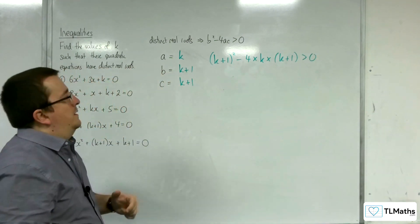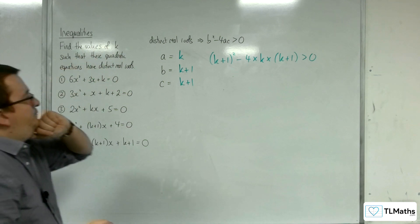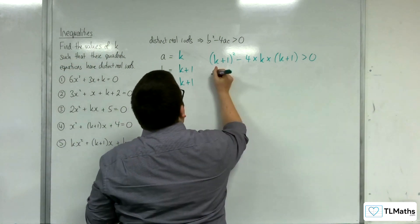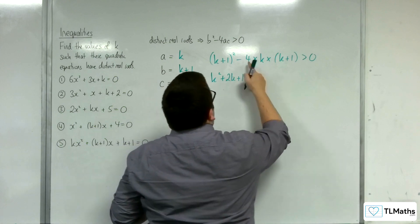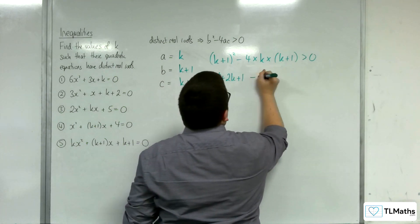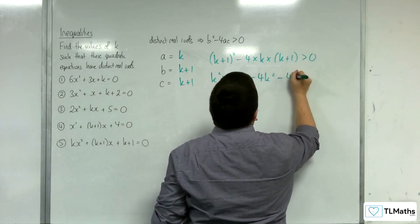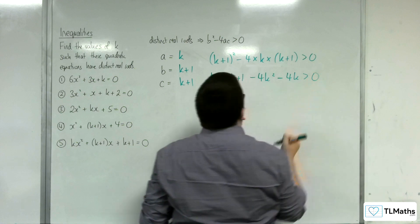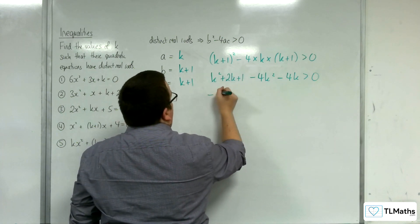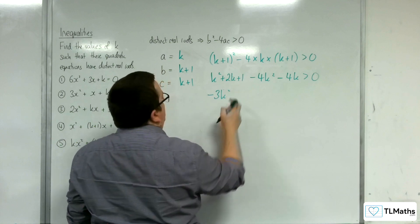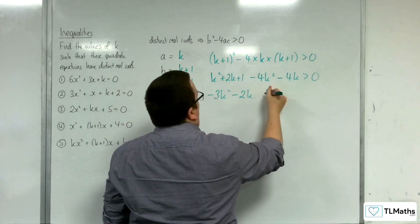I've substituted into the inequality rather than the formula. k plus 1 squared is k squared plus 2k plus 1. We've got minus 4k times k, so take away 4k squared. And we've got minus 4k times 1, so minus 4k is greater than 0. We have k squared take away 4k squared is minus 3k squared. 2k take away 4k is minus 2k. And we've got the one left over.